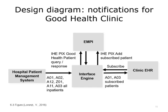Diagrams are very useful in the design process. Each system is represented as a box on the diagram, with arrows representing each individual interface and the direction of data flow. Next to each line is information about the kind of data sent. This diagram represents the design for patient notifications for Good Health Clinic. The hospital patient management system sends patient administration messages — HL7 V2 events A01, A02, A12, Z01, A11, and A03 — about all patients admitted, transferred, and discharged to the interface engine.